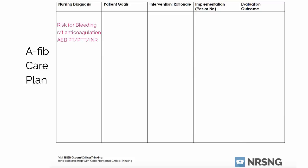Our first nursing diagnosis is risk for bleeding related to anticoagulation, as evidenced by PT, PTT, and INR. When a patient is in atrial fibrillation, they're at high risk for a clot, so we give them an anticoagulant. In the hospital, we generally start with heparin and then move towards Coumadin. We can also move towards Lovenox — there are different kinds of anticoagulation a patient could be taking — and it will be changing their bleeding times and clotting times.